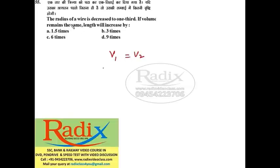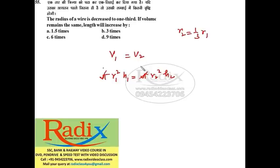Next question: The radius of a wire is decreased to one third; if volume remains the same, how much does the length increase? Since Volume 1 = Volume 2, pi·r1²·h1 = pi·r2²·h2. Pi cancels; r2 = r1/3, so r1²·h1 = (r1²/9)·h2. Therefore h2 = 9·h1, so the length increases 9 times. Answer is option D.